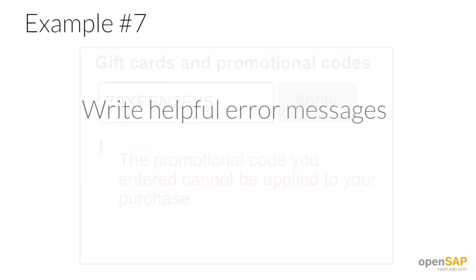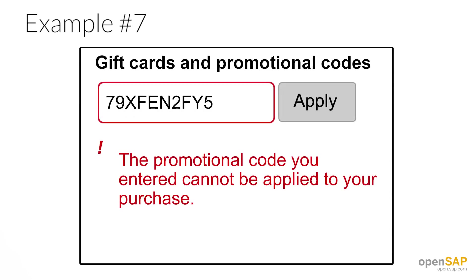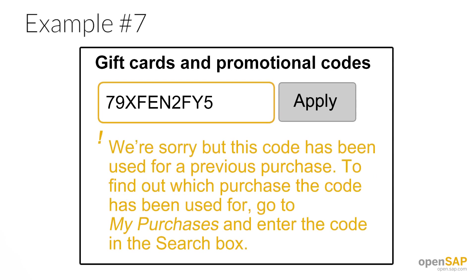Example seven. Here's a simple example that shows an unhelpful error message. It provides the correct information, but it doesn't give the reader any constructive things to do about it. This is also from one of our course participants, and she suggested changing the error message to the friendlier: 'We're sorry, but this code has been used for a previous purchase. To find out which purchase the code has been used for, go to my purchases and enter the code in the search box.' This gives the reader something to do about the problem. We've also used 'sorry' here because the reader might be very annoyed that their gift card isn't working.